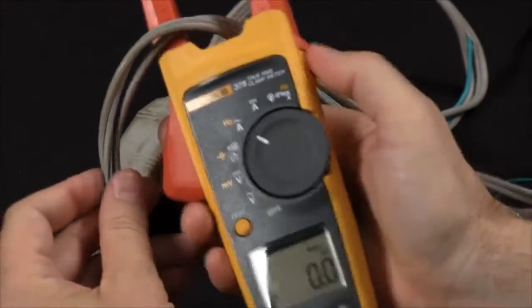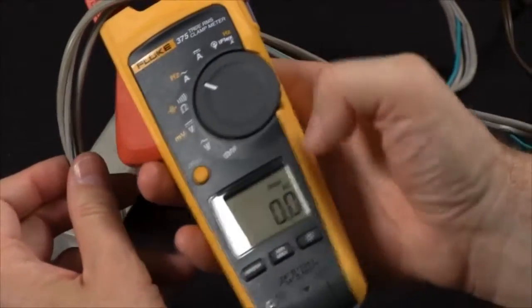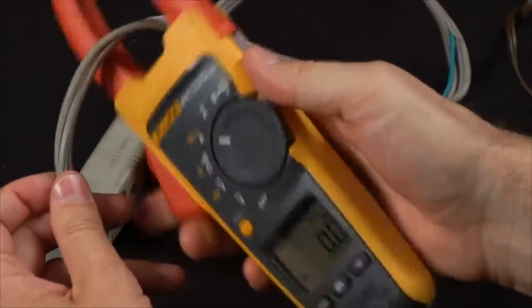A mistake that a lot of people make is trying to measure around the entire cord. You'll see that the flow going through my hot and returning through my neutral is going to cancel out, and we'll see a zero indication on the screen.